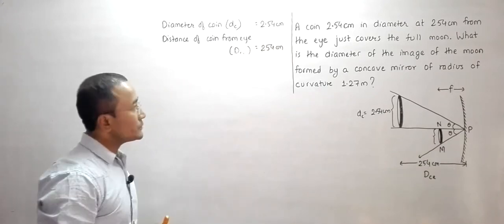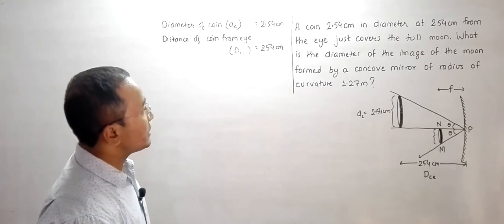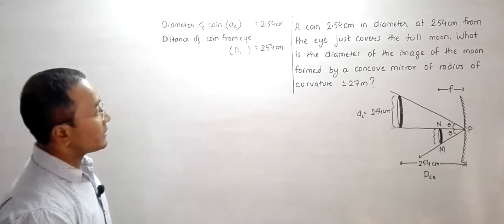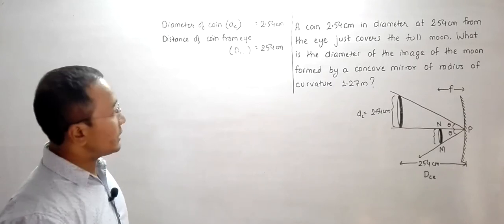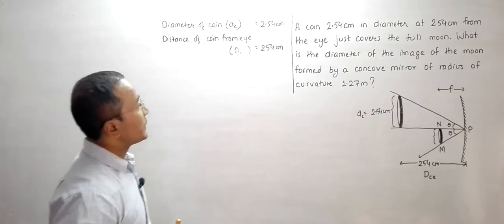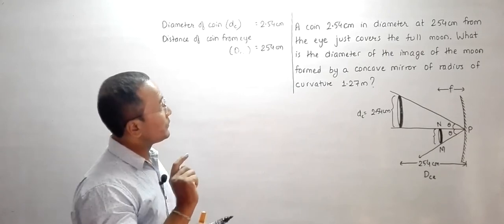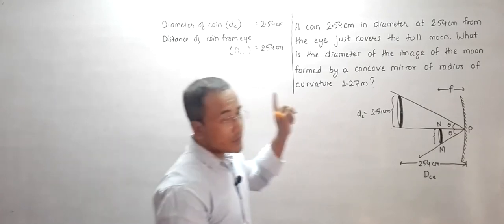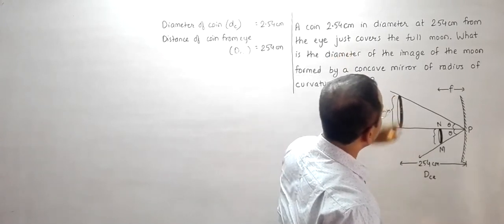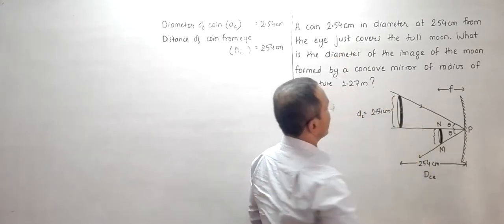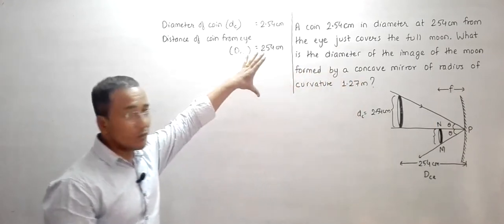What is the diameter of the image of the moon formed by a concave mirror of radius of curvature 1.27 meters? The problem states that this coin just covers the full moon, meaning the moon is situated far away and is of large size.